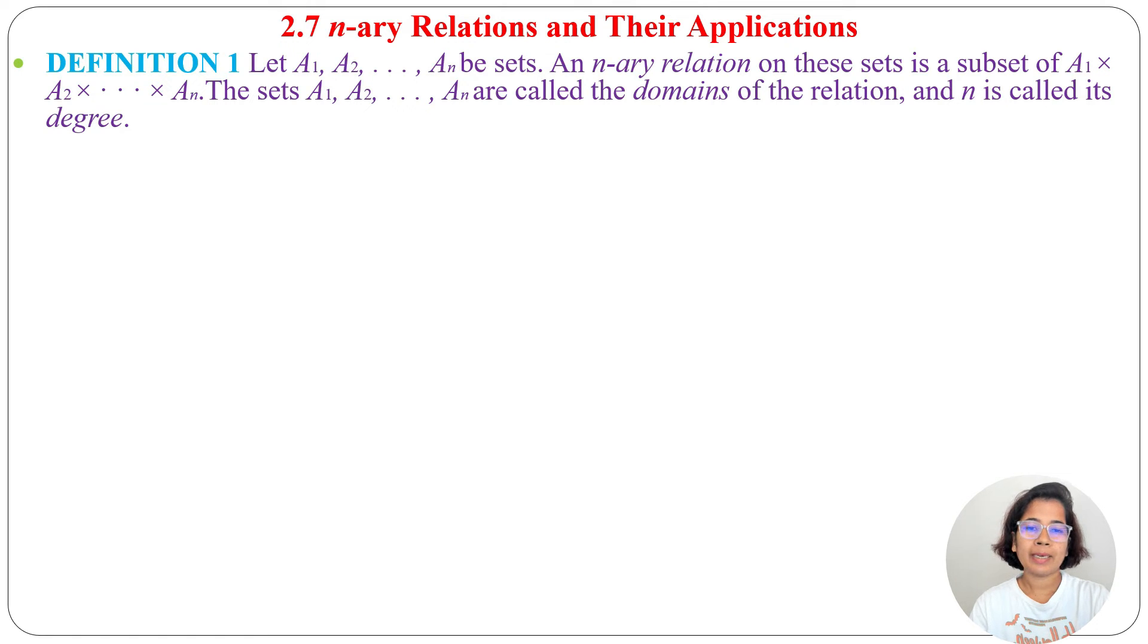A binary relation is also a subset of a cartesian product. If there is a relation from A to B, then this is a subset of A × B. Here you have a relation between A₁ through Aₙ, and that is a subset of A₁ × A₂ × ... × Aₙ.